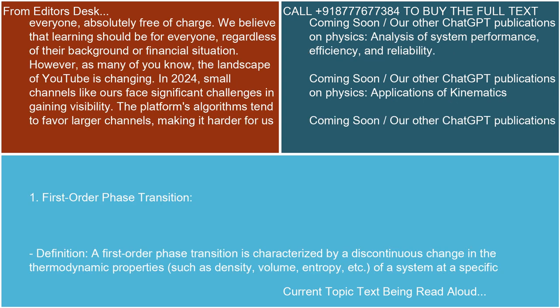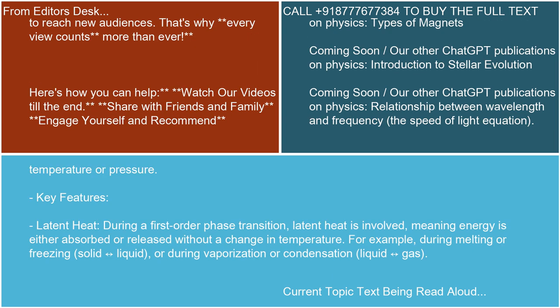One. First-order phase transition. Definition: A first-order phase transition is characterized by a discontinuous change in the thermodynamic properties — such as density, volume, entropy, etc. — of a system at a specific temperature or pressure.